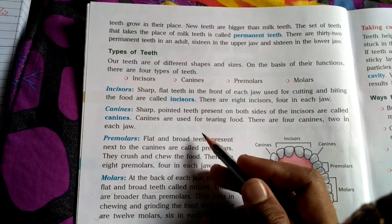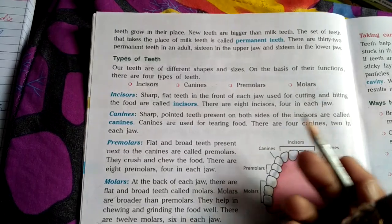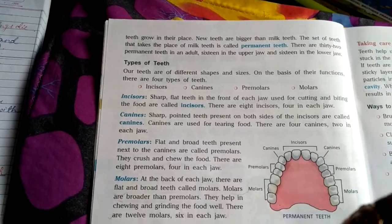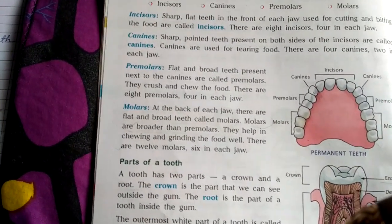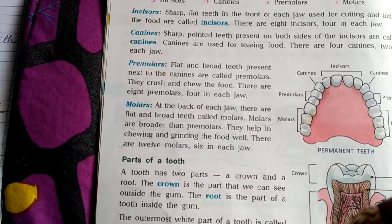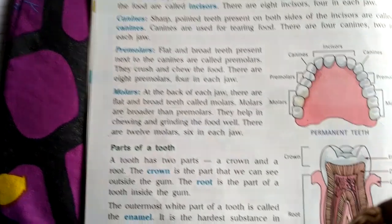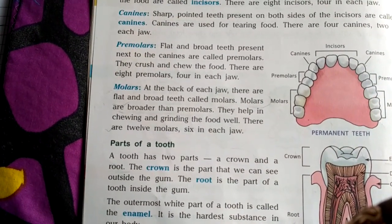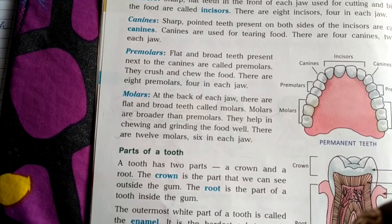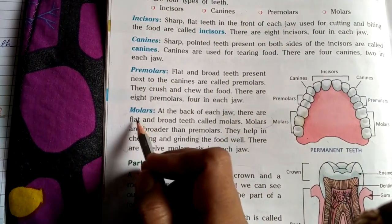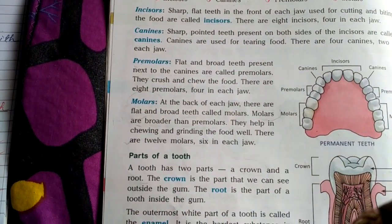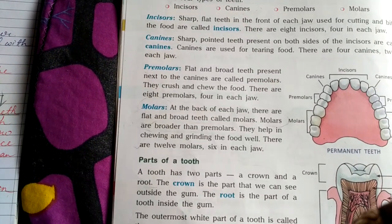Canines are sharp and pointed teeth present on both sides of the incisors; their function is to tear food apart, and there are four canines — two in each jaw. Premolars are flat and broad teeth present next to the canines; they crush and chew food, and there are eight premolars — four in each jaw. Molars are at the back of each jaw, broader than premolars, and they help in chewing and grinding food; there are 12 molars — six in each jaw.